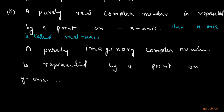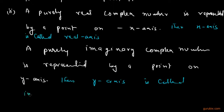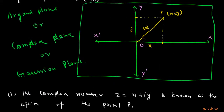The x-axis is called the real axis and the y-axis is called the imaginary axis.